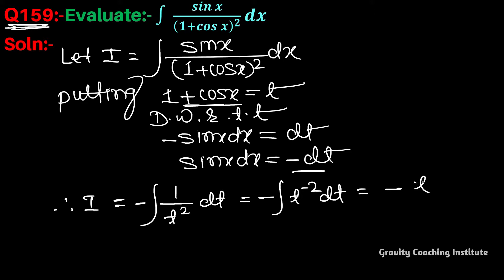Now integrate this: minus t to the power minus 2 plus 1 upon minus 2 plus 1 equals minus t to the minus 1. The negatives cancel, so 1 by t plus c, which equals 1 upon (1 plus cos x) plus c.